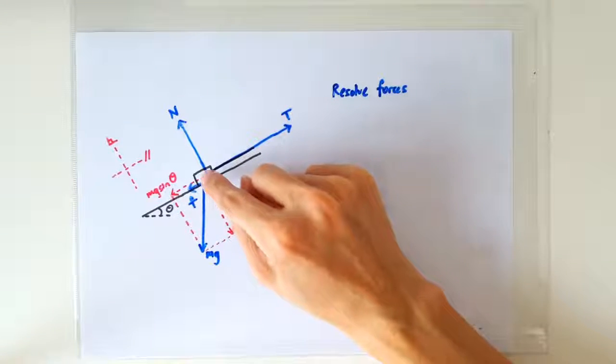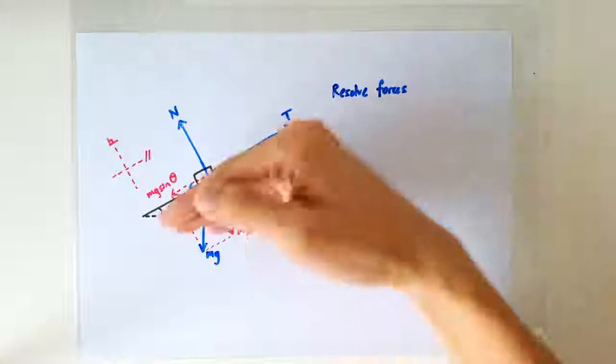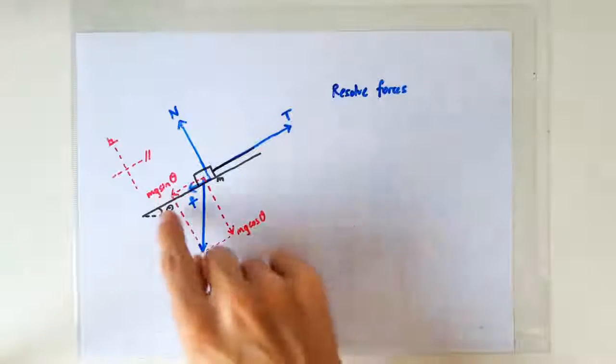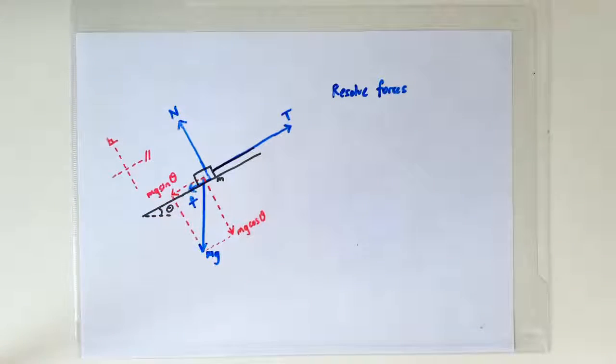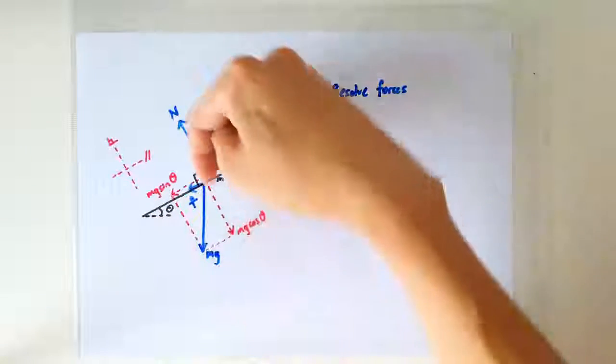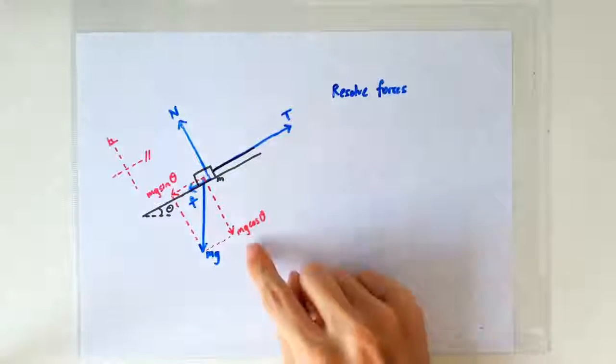So the components of mg parallel to the slope turns out to be mg sinθ, θ is the angle of the slope, and the components of mg perpendicular to the slope turns out to be mg cosθ.